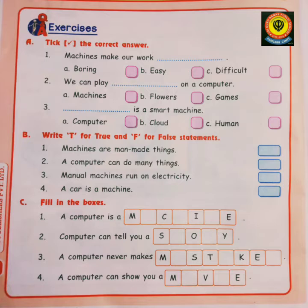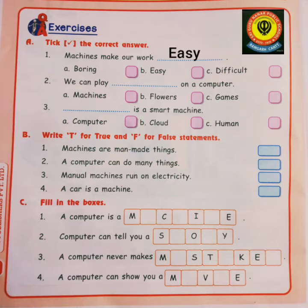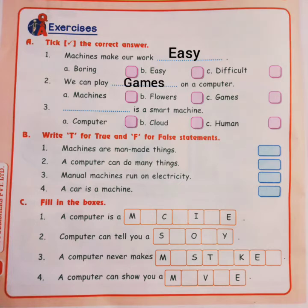Let's come to the exercise. First, tick the correct answer. Question number one: a machine makes our work — the answer is B, very easy. Question number two: we can play dash on a computer — games, so the answer is C. We can play games on a computer.